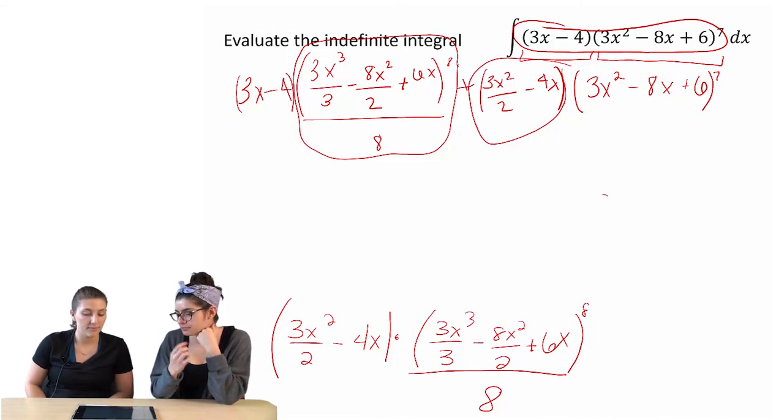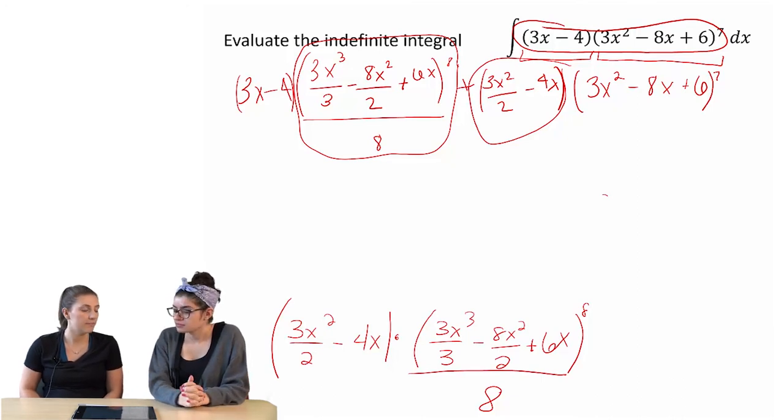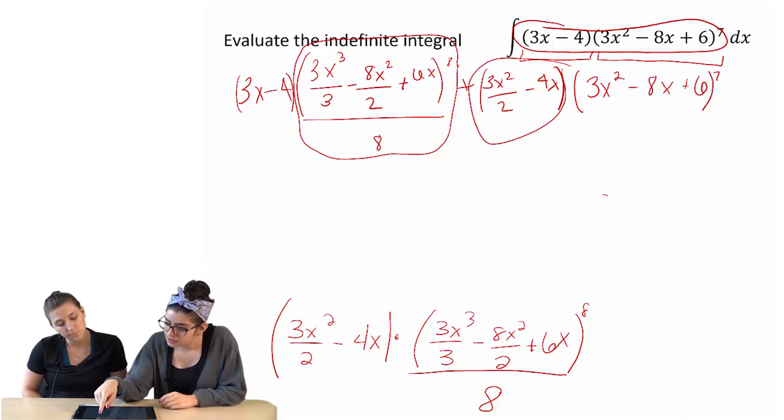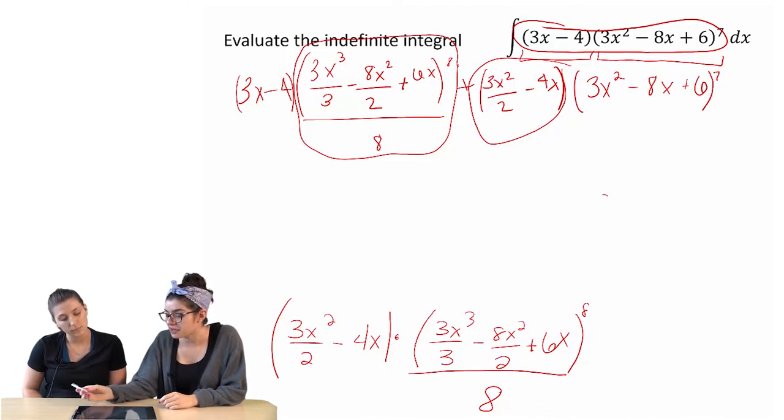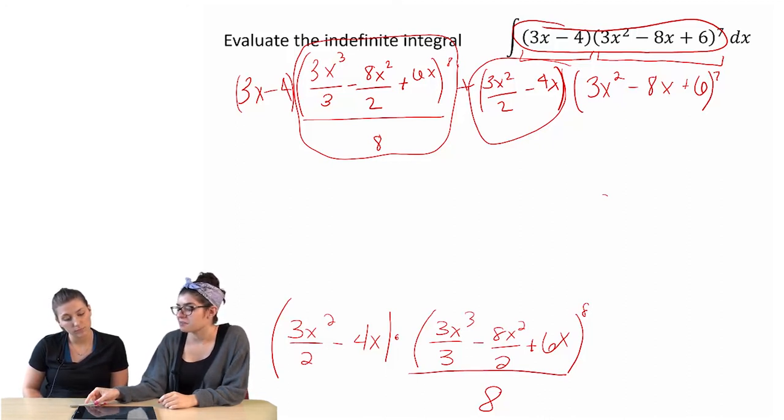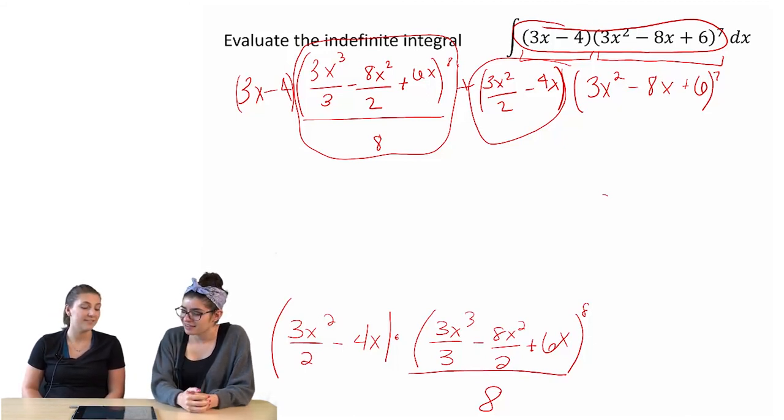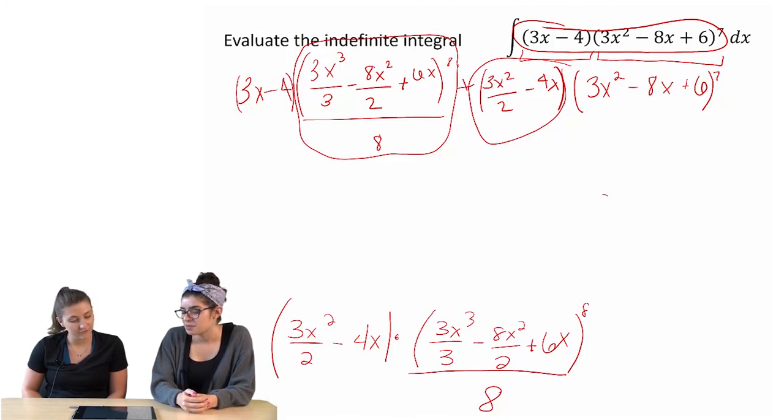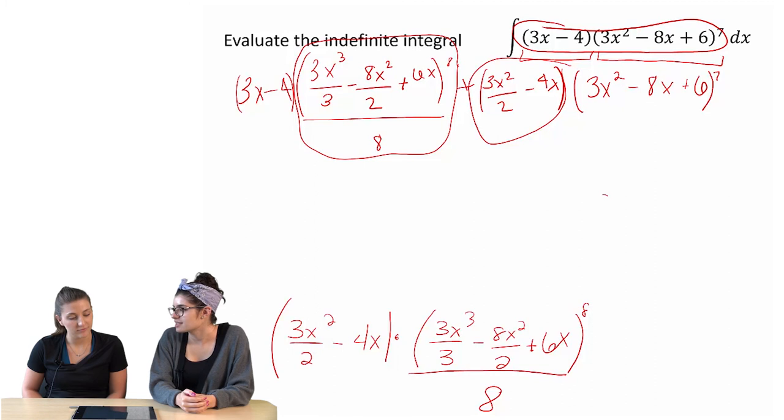It would be helpful if there was like a rule for it. Yeah. I mean, we could also maybe take what we started with and just... We could multiply the whole thing out. But we have that power of seven in there, so you'd have to multiply that seven times. Yeah. So I don't really want to do that. No. But it would be nice if we had kind of a shortcut to get there. Yeah.